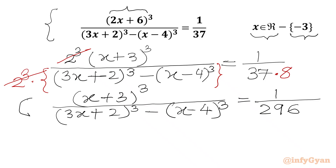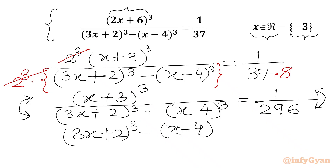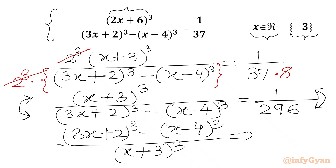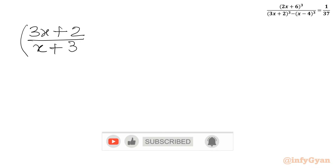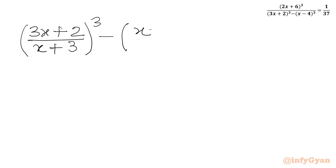Now I will take the reciprocal of both sides, switching numerator and denominator. We can write the equation as (3x+2)³ minus (x-4)³ over (x+3)³, which we can split as (3x+2)/(x+3) whole cubed minus (x-4)/(x+3) whole cubed, equal to 296.